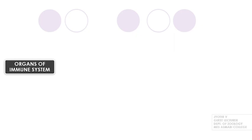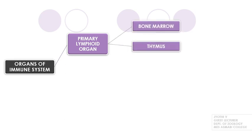Now let's look at the primary lymphoid organs. There are two primary lymphoid organs: bone marrow and the thymus gland. There are two types of lymphocytes — B lymphocytes and T lymphocytes — which are named according to the organs in which they mature. B lymphocytes mature within the bone marrow and T lymphocytes mature within the thymus gland. So bone marrow and thymus gland are the primary lymphoid organs.